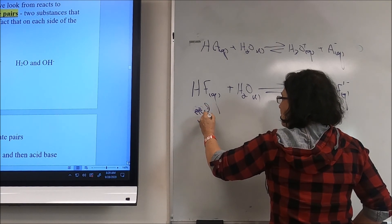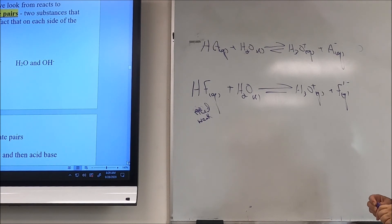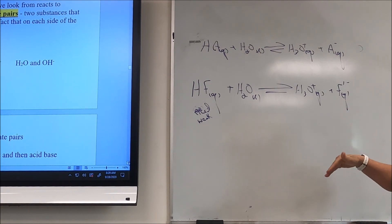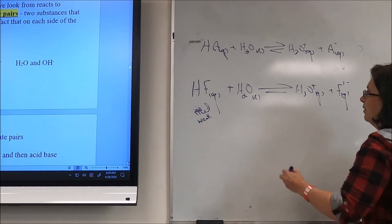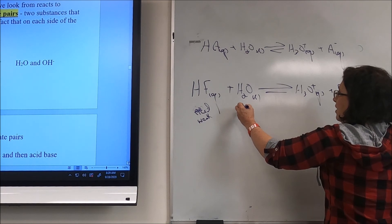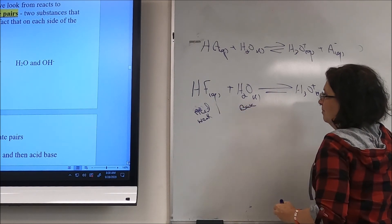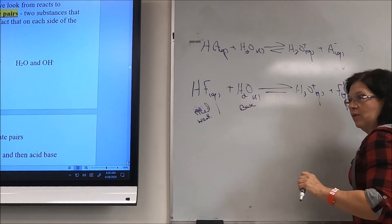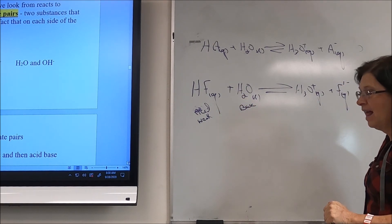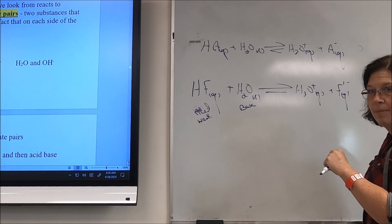HF is a weak acid — remember, the hydrogen halides below fluorine are strong acids but HF is weak. The water here has to be acting as a base, because an acid has to react with a base. In the Bronsted-Lowry definition, the acid donates and the base accepts.